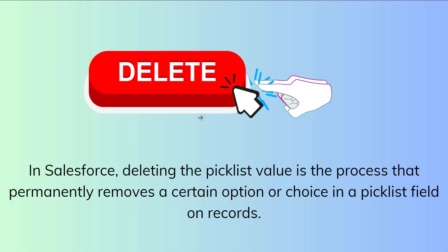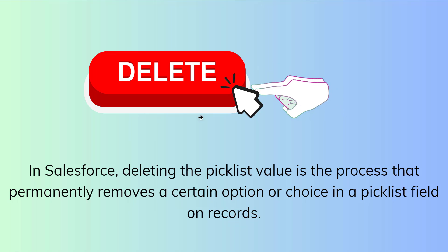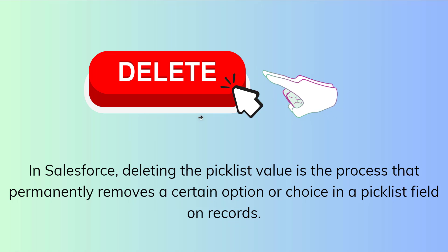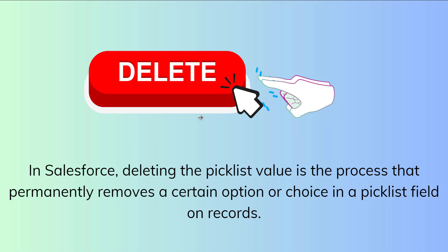If you get confused between delete and deactivate, we also have a video on deactivating a picklist value in Salesforce — the link is given in the description box. Basically, deactivating only marks the picklist value as inactive, while deleting permanently removes the picklist value from Salesforce. So there is a huge difference between delete and deactivate.